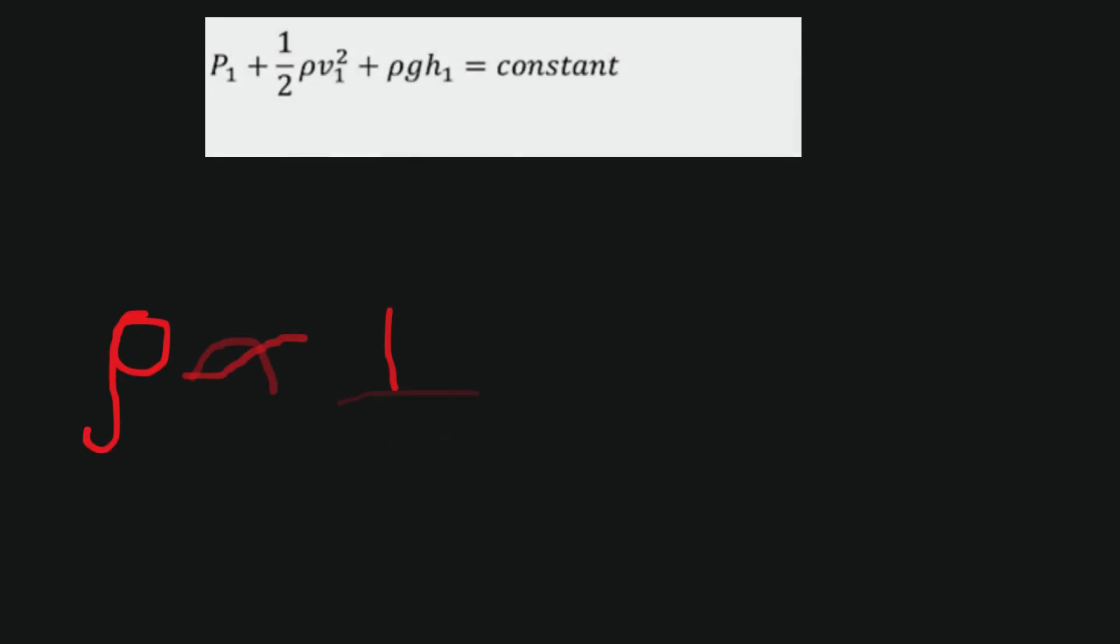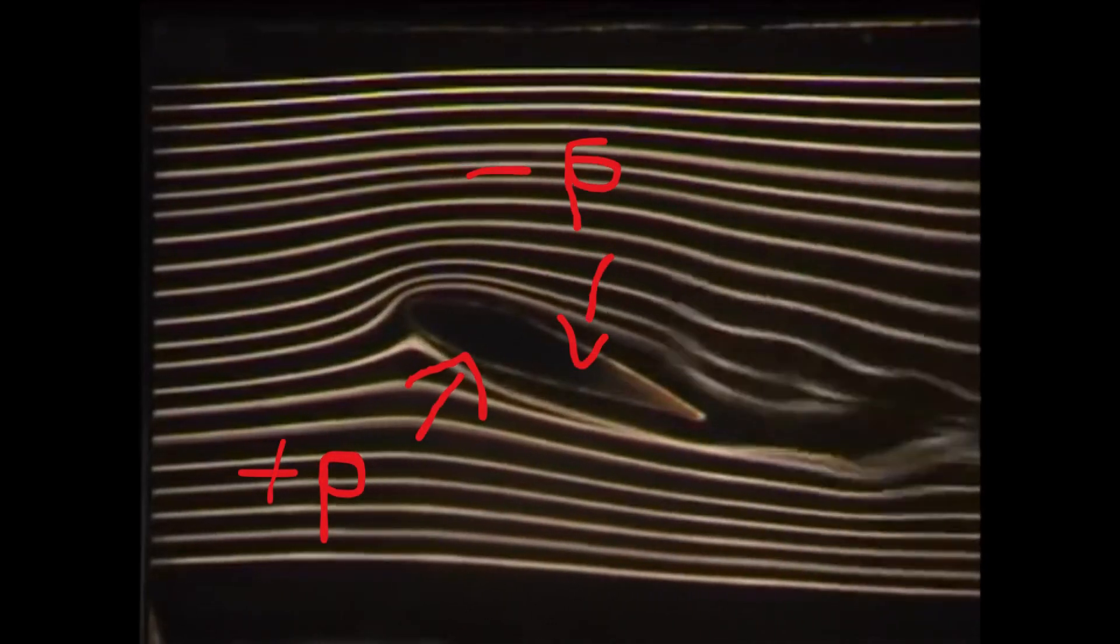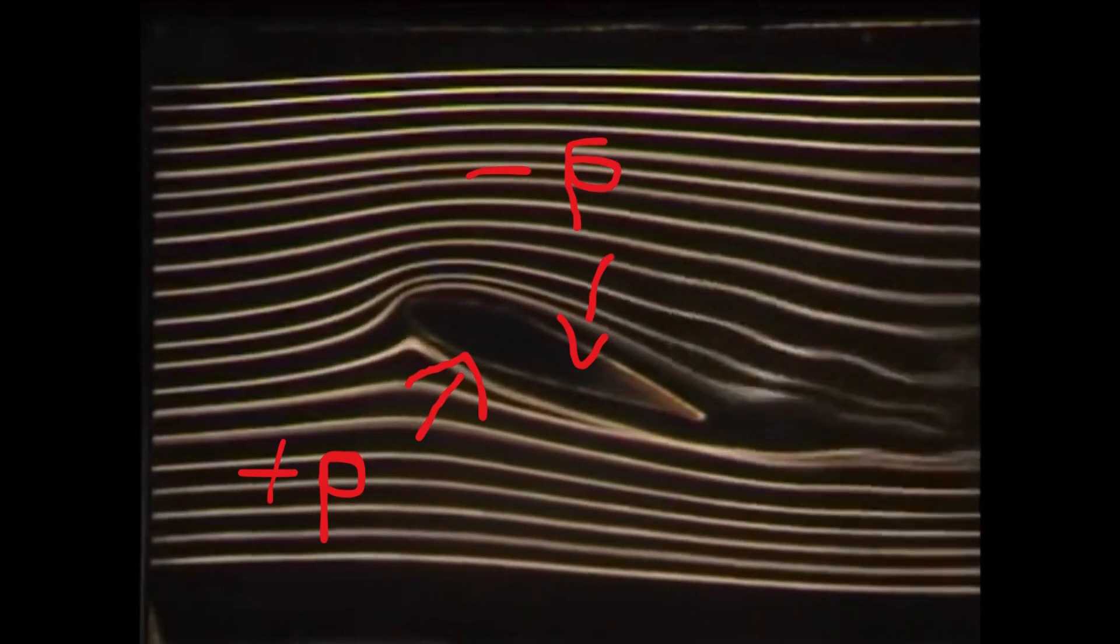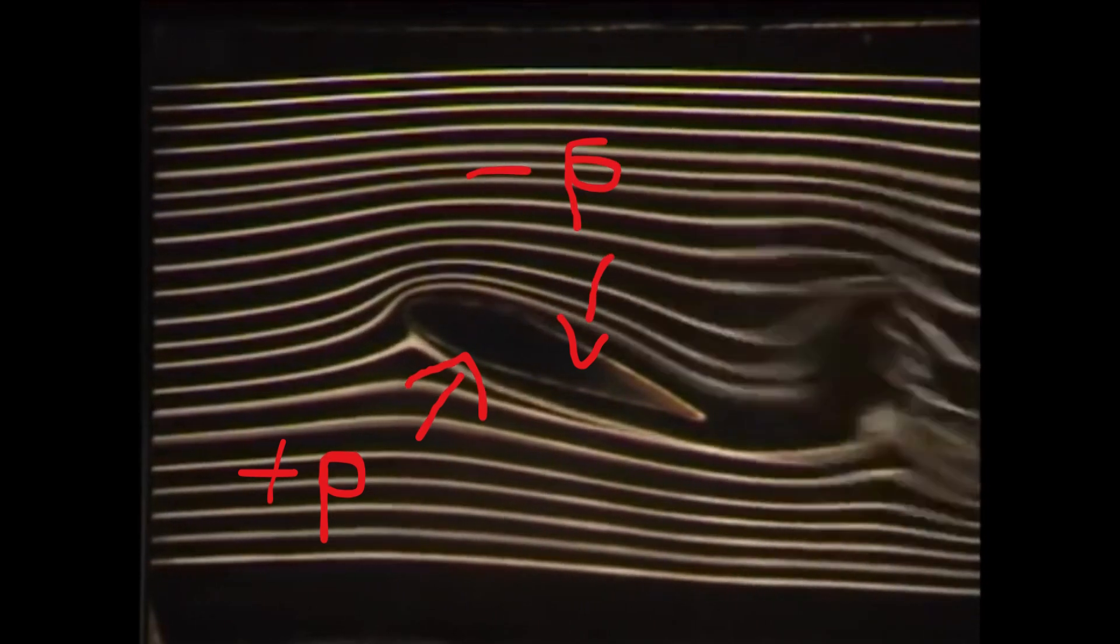Now from Bernoulli's principle, we see that pressure is inversely proportional to velocity. If we see the flow of air over an object, we see the air above the surface has to travel more distance. Therefore, there is higher velocity above the object, that means there is lower pressure above the object.